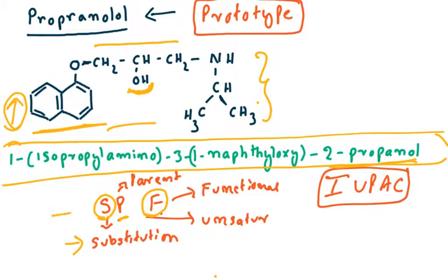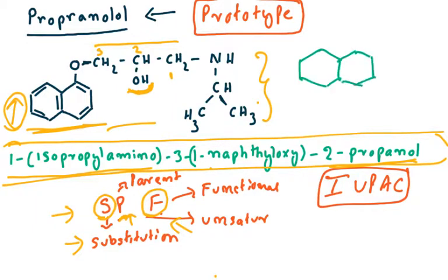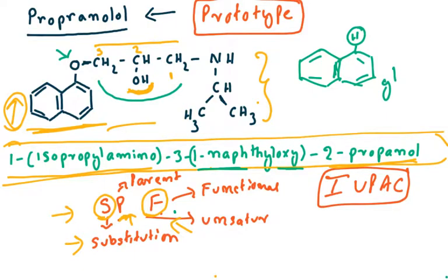When naming, you write substitution, then parent, then functional group. The substitution is isopropylamine at the first carbon. The parent ring is 1-naphthyloxy — naphtha refers to the naphthalene ring; replacing a hydrogen with oxygen gives naphthyl, and with the oxygen linkage it becomes naphthyloxy. The functional group is 2-propanol — a three-carbon chain with OH at the second carbon. Following these simple rules makes writing the IUPAC name easier.